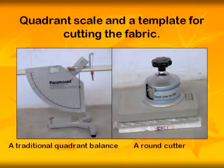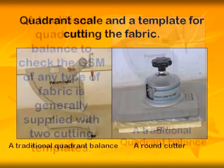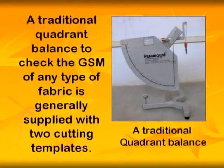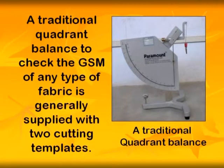The apparatus and accessories comprise of a quadrant scale for GSM and a sample cutter. A traditional quadrant balance to check the GSM of any type of fabric is generally supplied with two cutting templates. The quadrant scale is graduated in the units of grams per meter square.